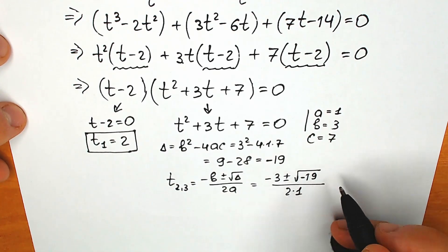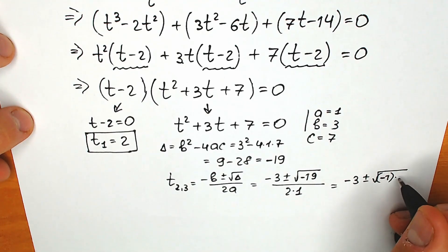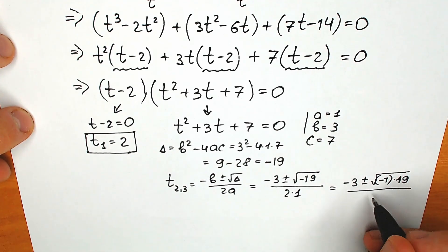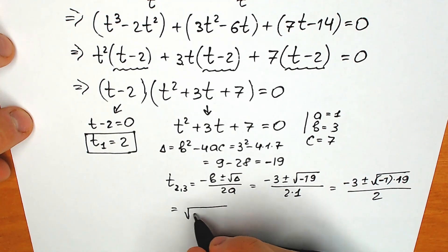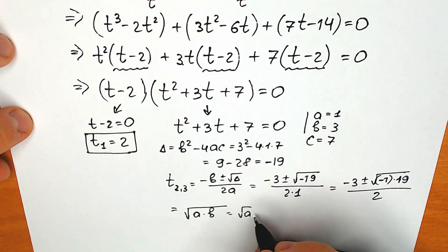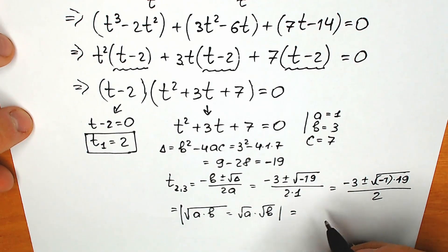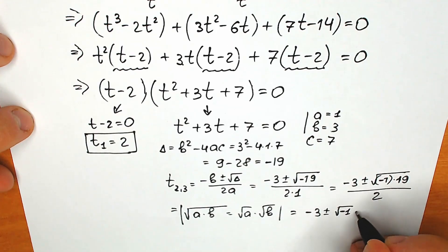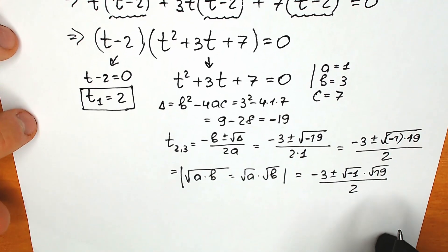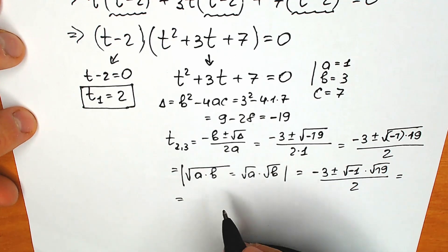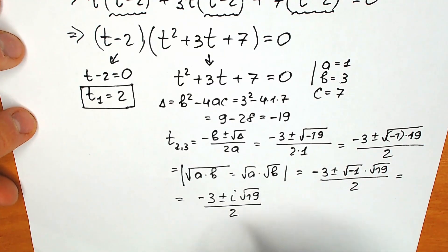We can express minus 19 as minus 1 times 19, so √(minus 19) = √(minus 1) · √19 = i√19. Therefore t₂,₃ equals (minus 3 ± i√19) / 2. These are our complex roots t₂ and t₃.